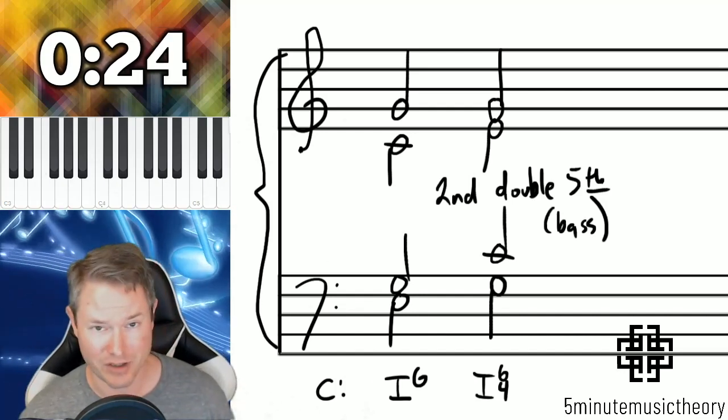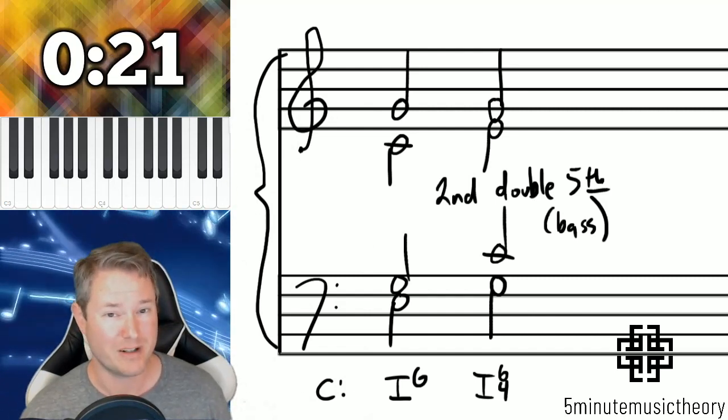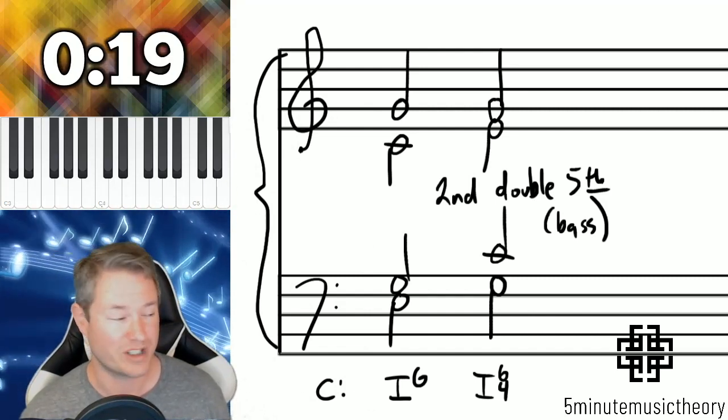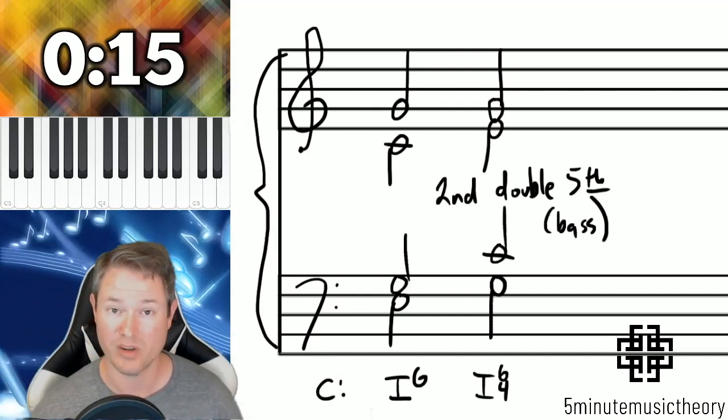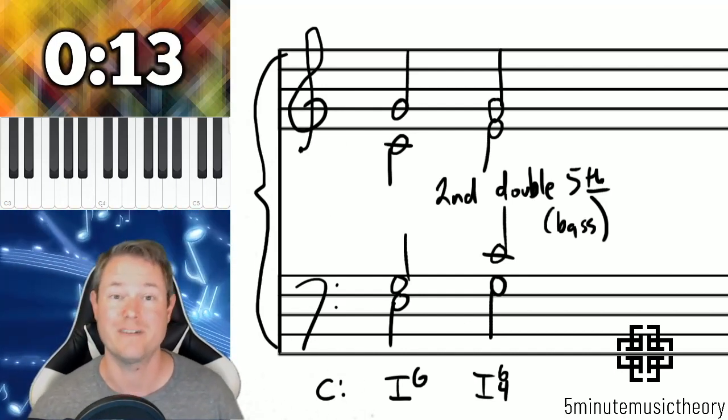And then second inversion triads, six four chords, they're quite a bit different than the others. We'll have a video which addresses them specifically, but the doubling rule for six four chords is to double the bass which also happens to be the fifth. Thank you.